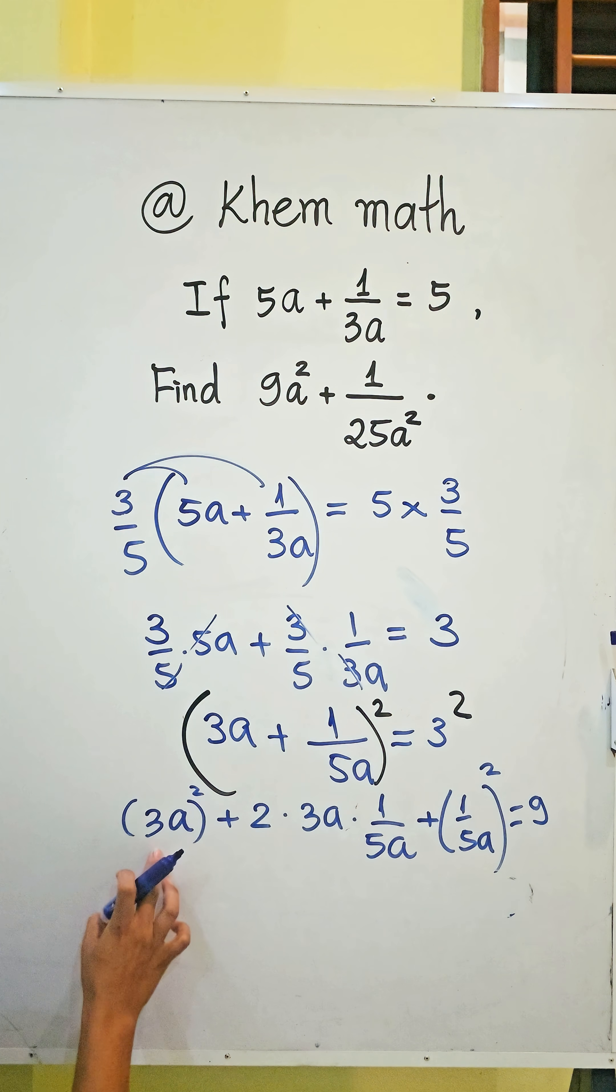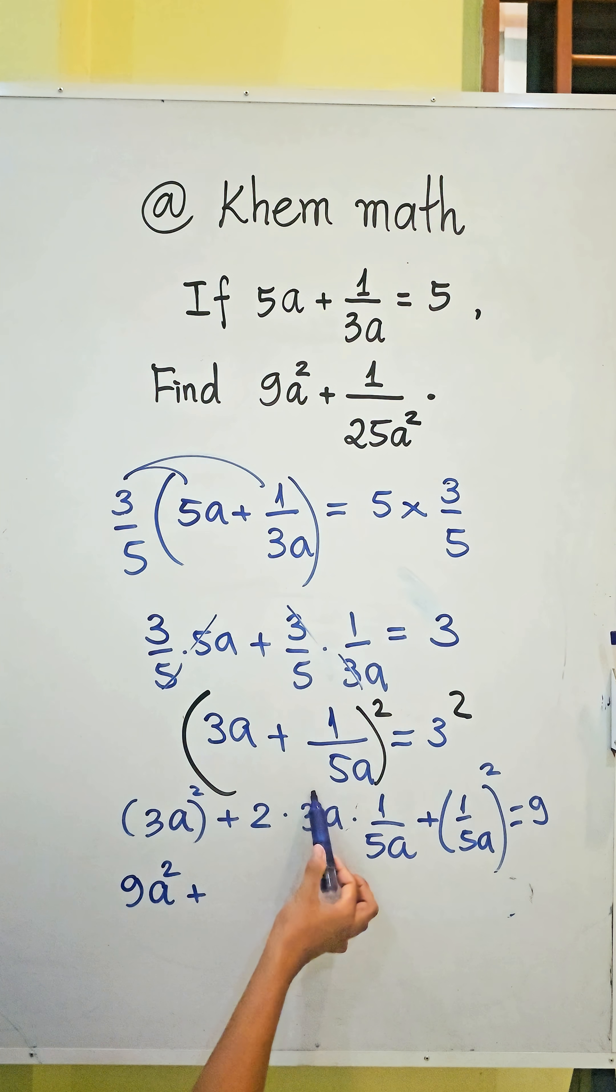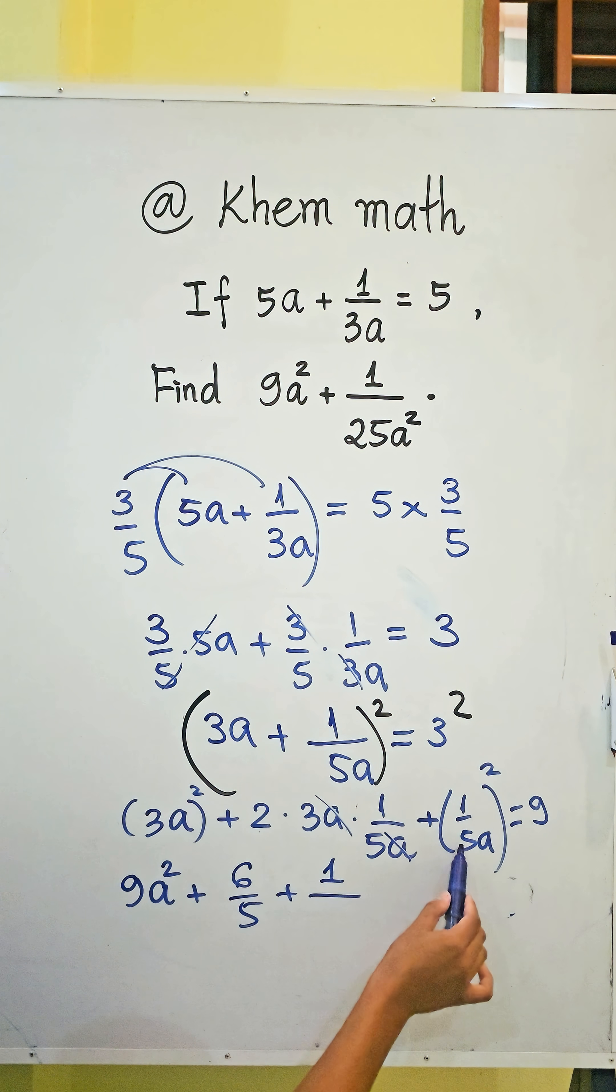And here we get 9a squared plus 6 divided by 5 plus 1 divided by 25a squared equals 9.